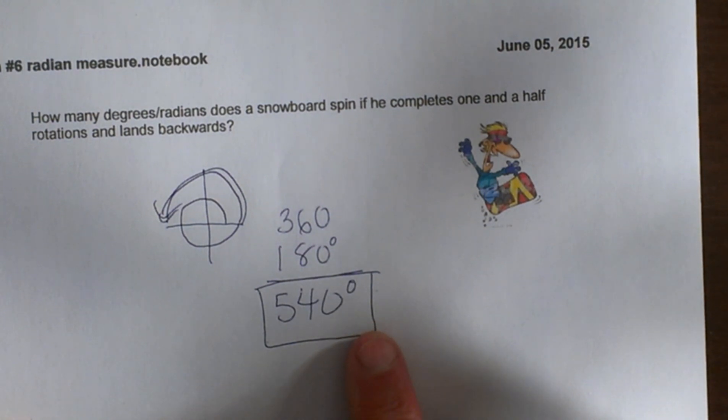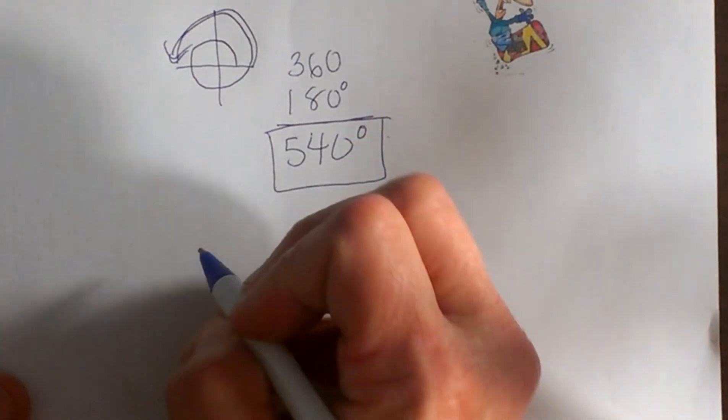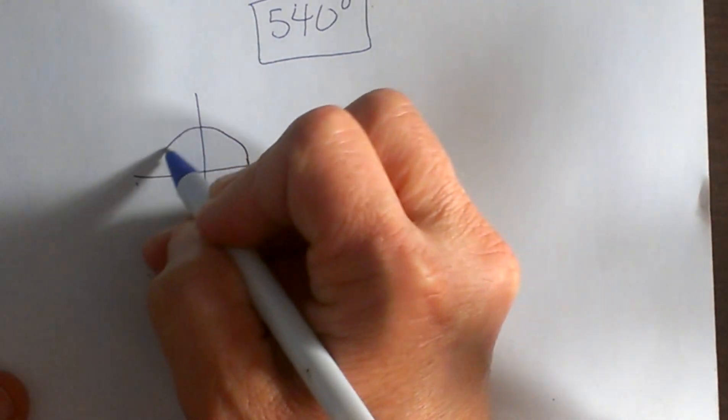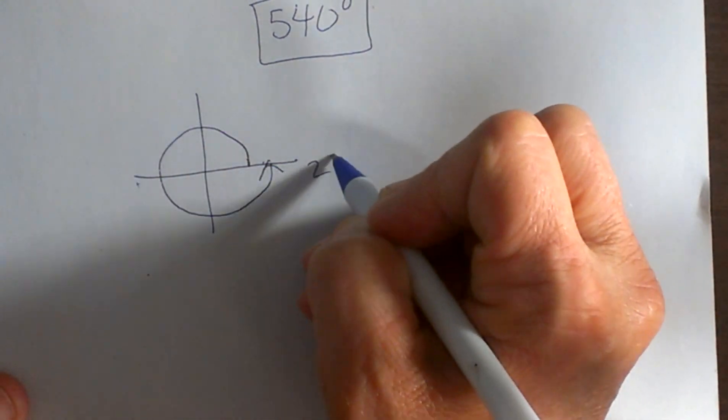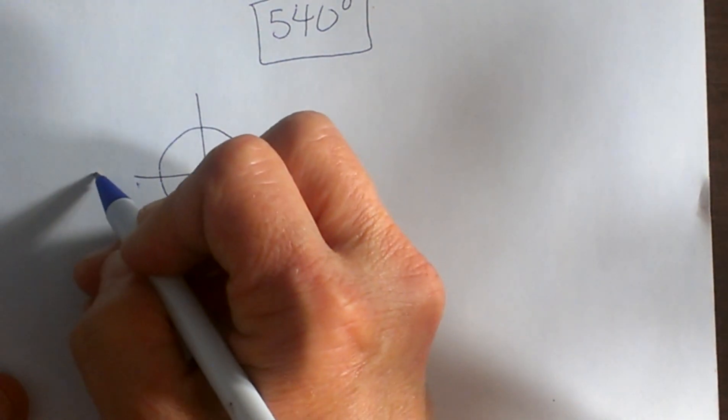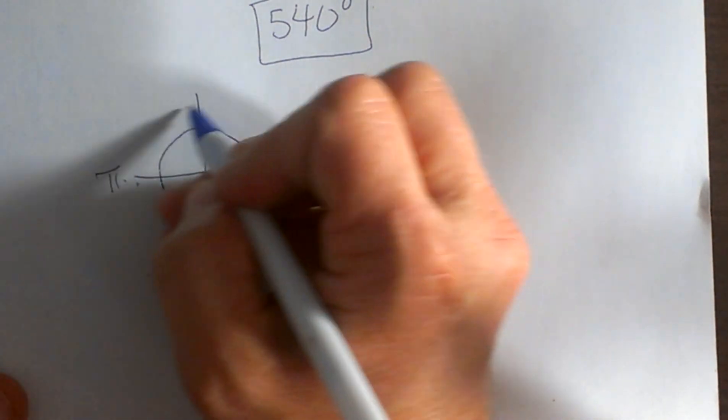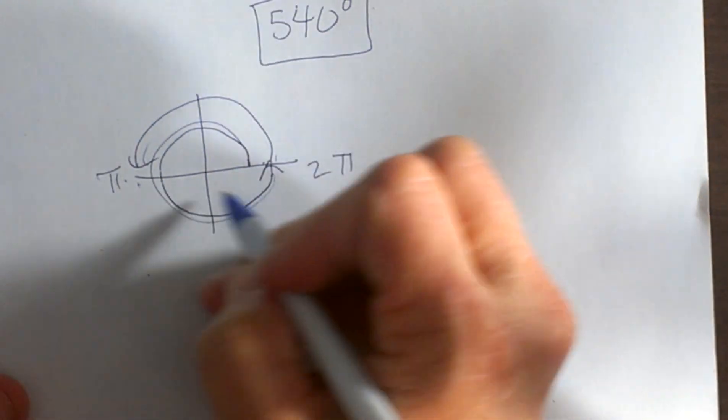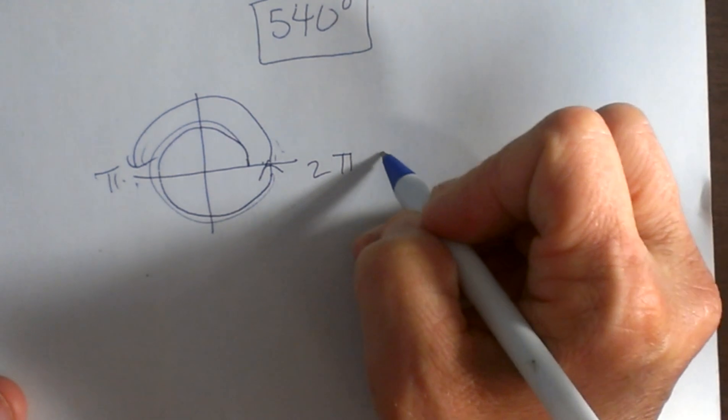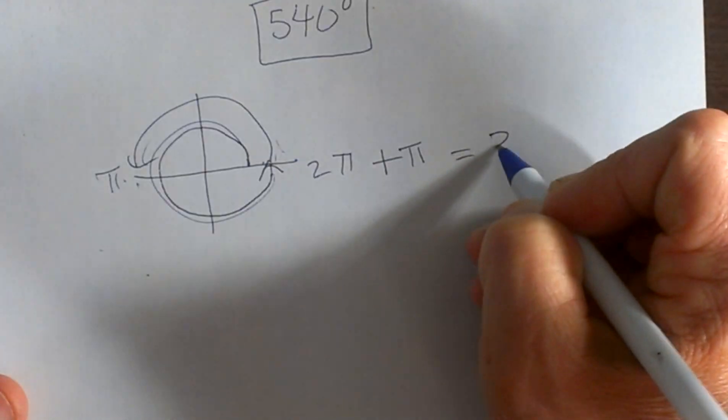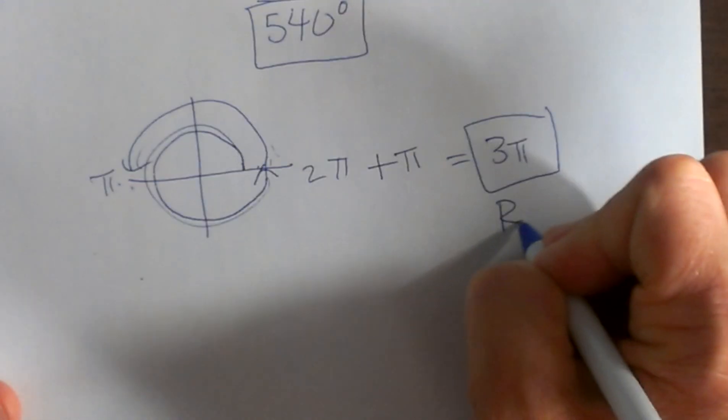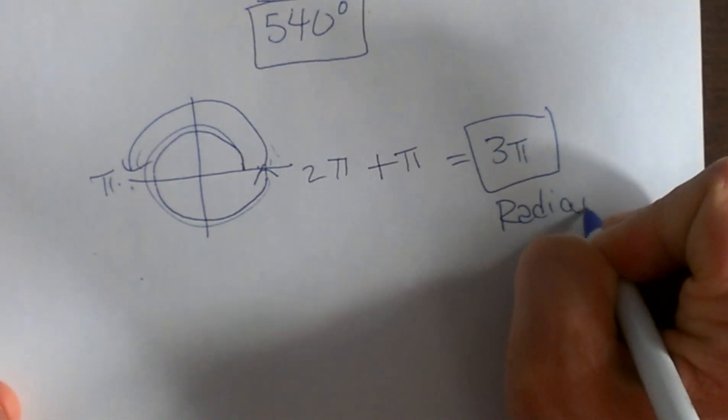Now how many is that in radians? Let me do this differently rather than just converting. Let's think about a unit circle. For one full rotation we know that's 2π. For half a rotation it's just π. So if he goes one and then another half, he's going to do 2π for the full rotation plus π for a half rotation, so that leaves us with 3π radians.